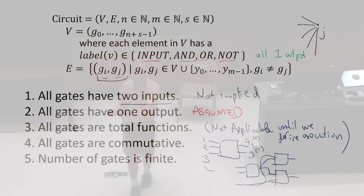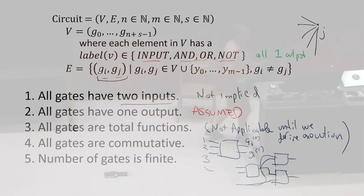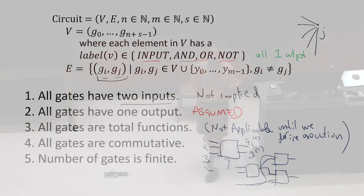Once we have universal finite functions, we can compute every function. In terms of what we're losing, it's not power — it's expressiveness. It might be that we can make a much smaller circuit if we could have gates with multiple outputs. One of the things we care about is efficiency in the size of the circuit. Certainly not allowing specific kinds of gates in our definition means we can't explore that.